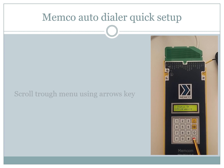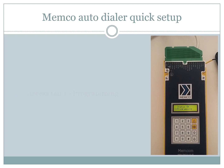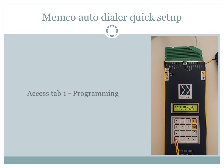We can scroll through the menu using the arrow keys. We should focus on tab number one: programming. To access it we should press key number one. We will use the star key to cancel or go back, and the H key to accept or go forward.